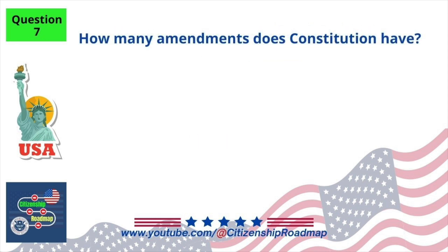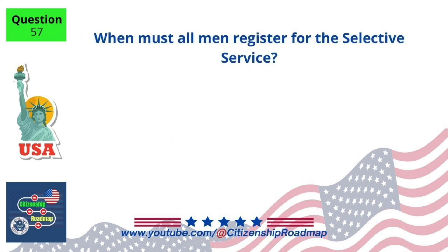Name one American Indian tribe in the United States. Cherokee. How many amendments does the Constitution have? Twenty-seven.